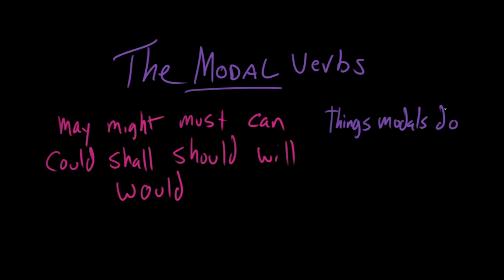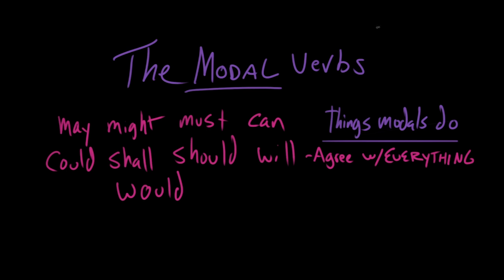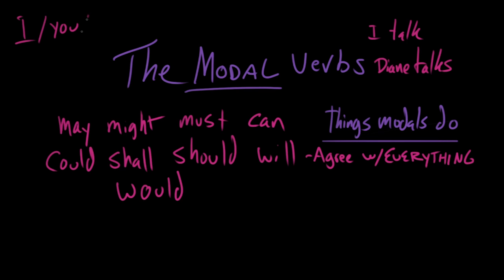Those are the modals. So here's what modal verbs can do. Thing number one: they agree with everything. You can take any one of these modals and use any subject and it's not going to change. You take a word like 'talk' and you'd say 'I talk,' 'Diane talks' — you add the S. But any subject in any sentence is going to take the modal verb the same way. I can do it. You can do it. She can do it. They can do it. We can do it. It's all the same — they agree with everything.